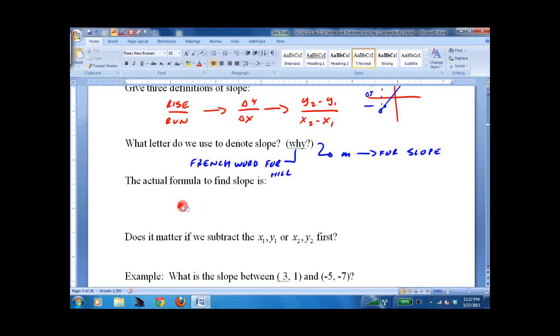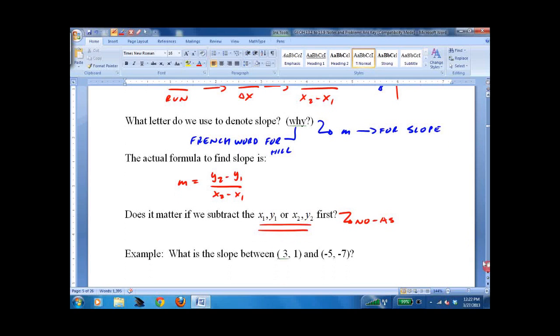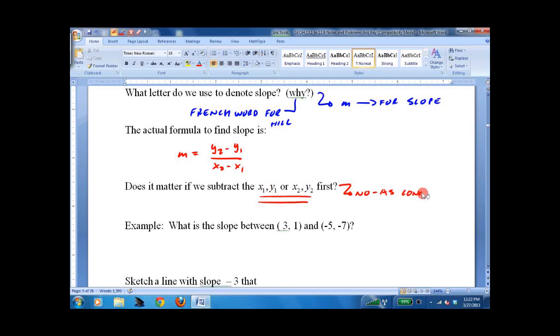And then the actual formula to find slope we actually did up above. Y2 minus y1 over x2 minus x1. Now, does it matter which order we put them in? No, as long as we're consistent. So if you're going to subtract, this would also be y1 minus y2 over x1 minus x2. Keep them in order.